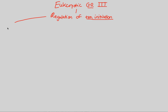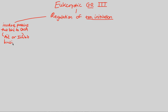We're going to start this flowchart by stating that this regulation involves proteins specifically — proteins that bind to DNA. These are very specific proteins that are going to be binding and are either going to aid or inhibit the binding of another very important enzyme we've talked about: RNA polymerase.